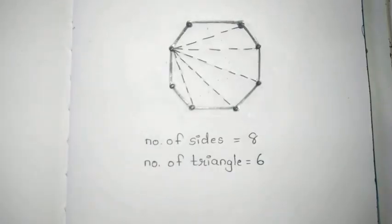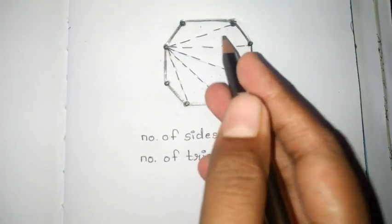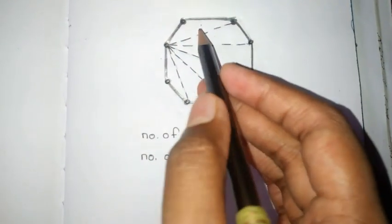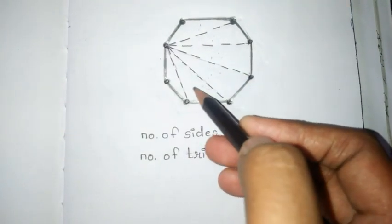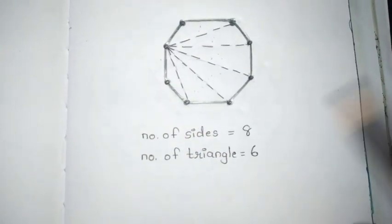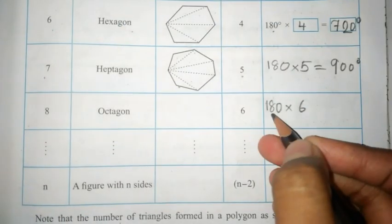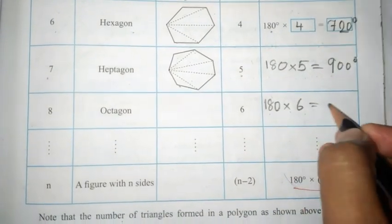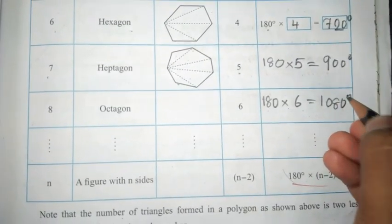An octagon has 8 sides. When we draw dotted lines, we get 6 triangles. Therefore, 180 multiplied by 6 gives you 1080 degrees.